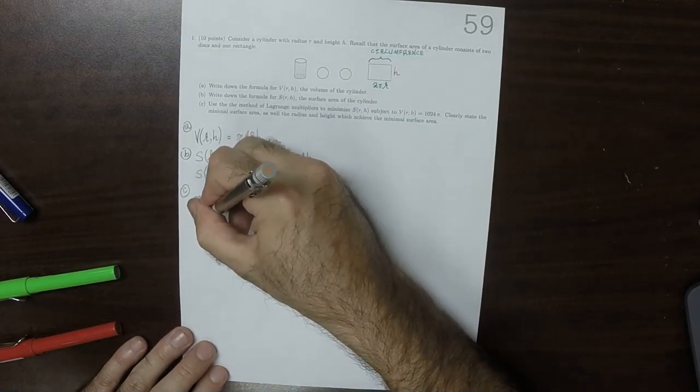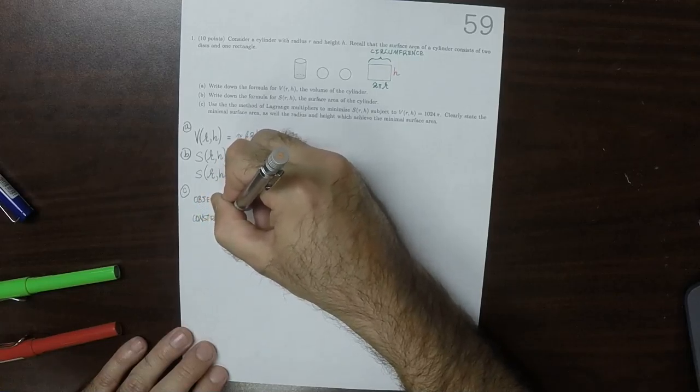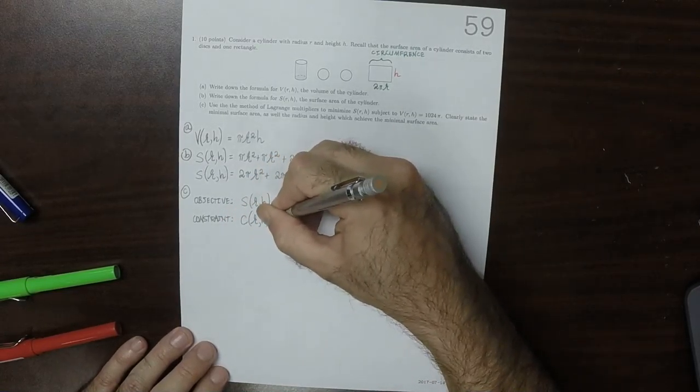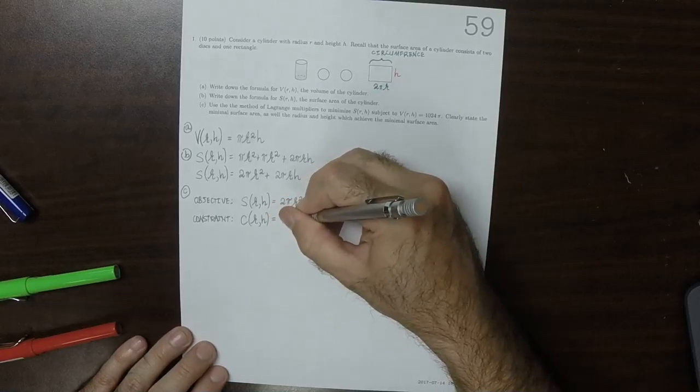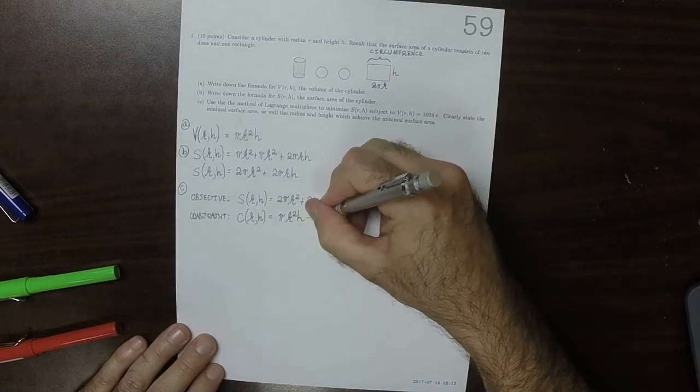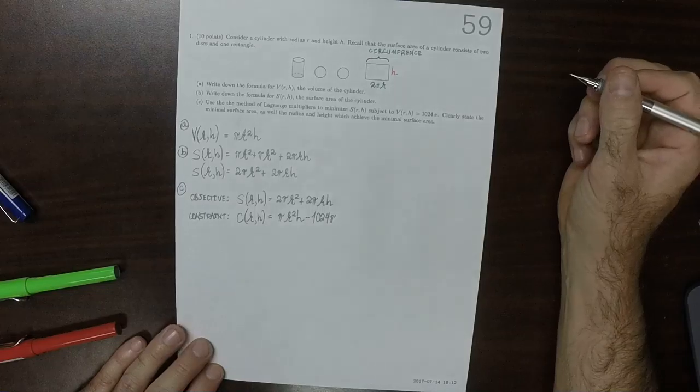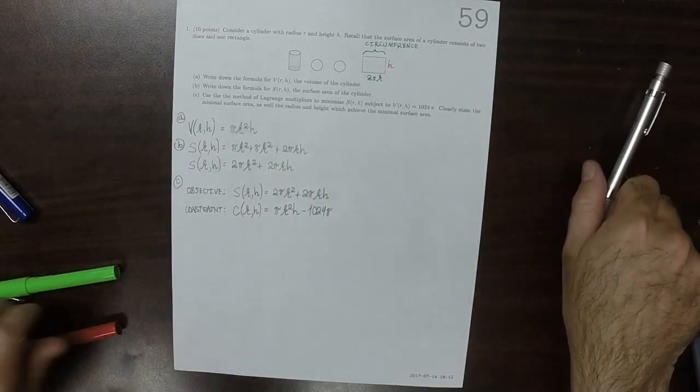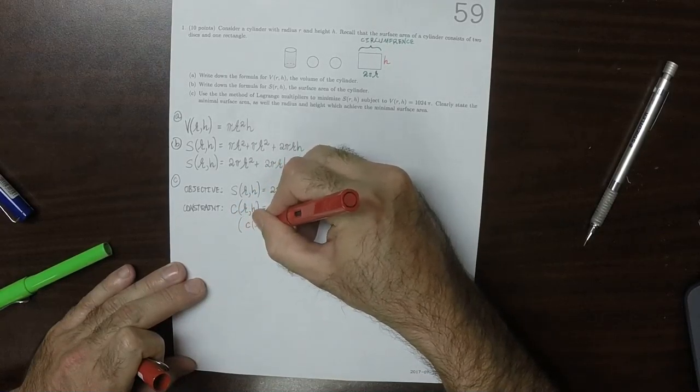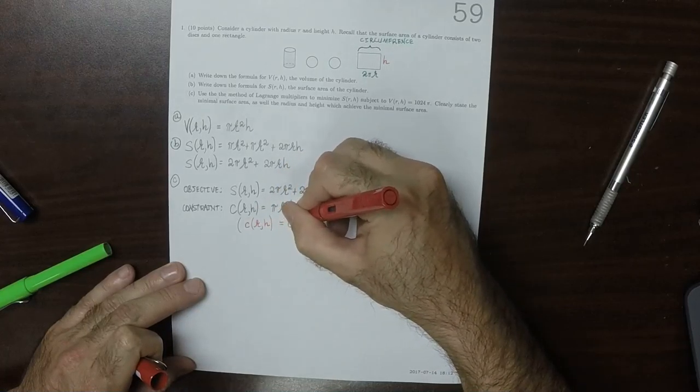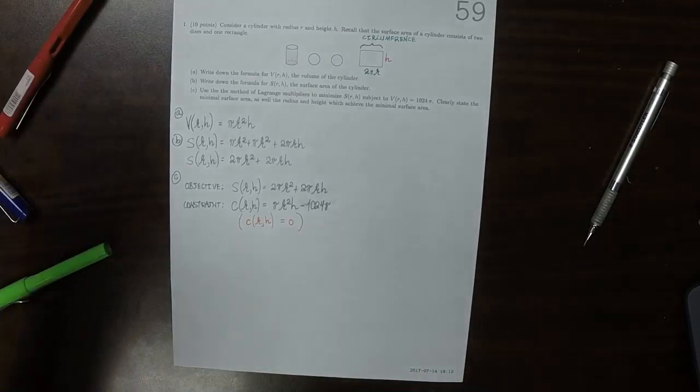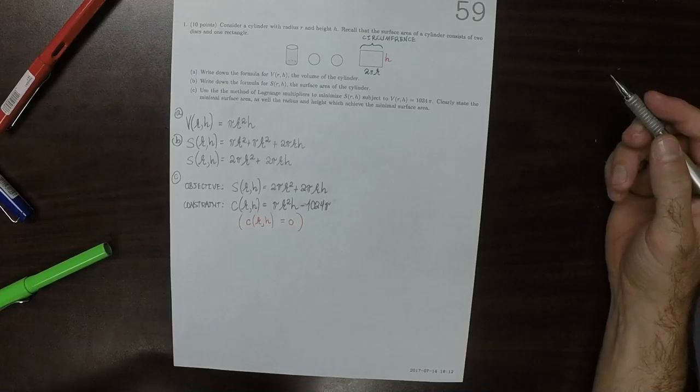The constraint function, which I'll call C, of r and h is pi r squared h and then minus 1024 pi because the constraint is going to be equal to 0. So that's saying that the volume must be 1024 pi.